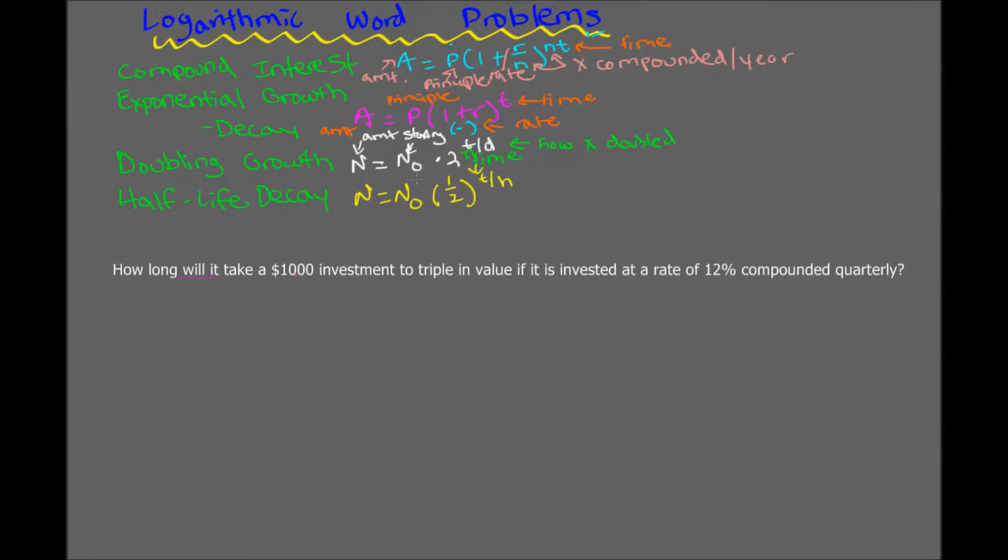Everything is the same as the previous. So N0, N, T. The only difference is the H and the 1 half. The H is the half-life. So if you have some element, for example, carbon-14, they'll give you a half-life of carbon-14, and you basically plug that number in to find whatever you need to find.